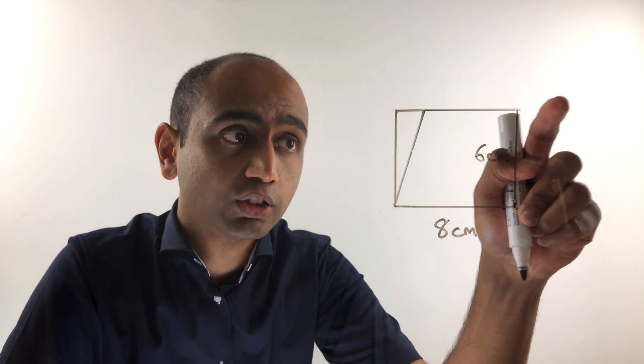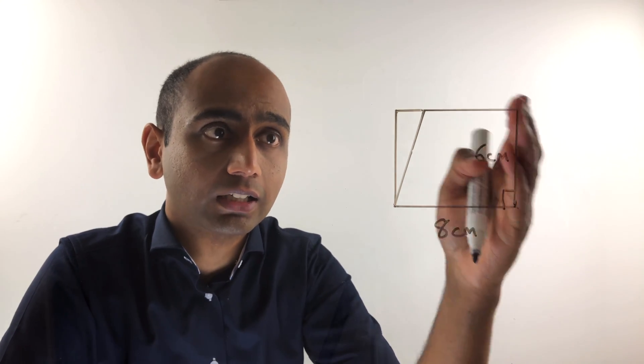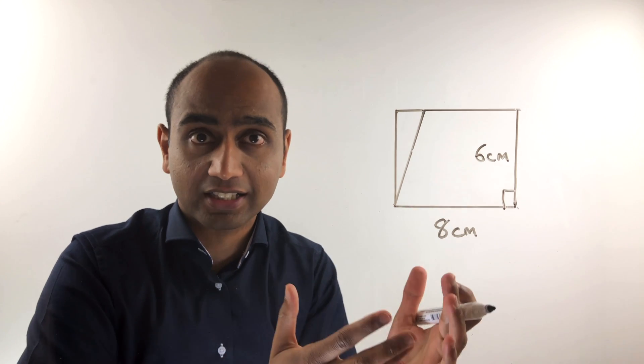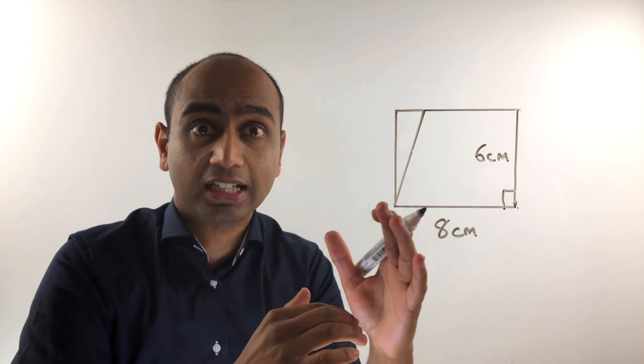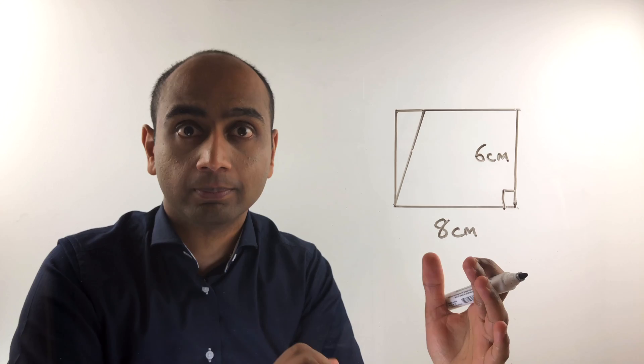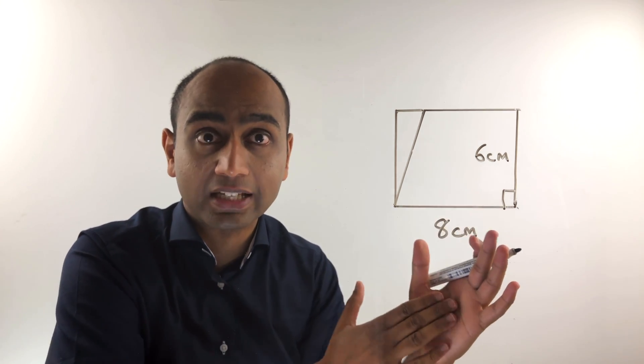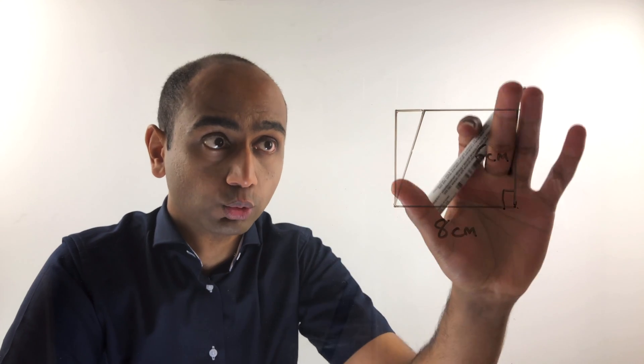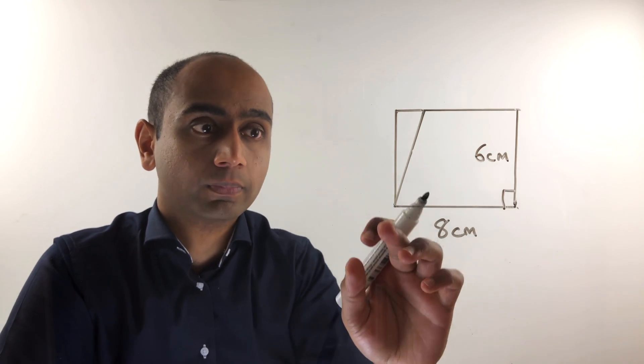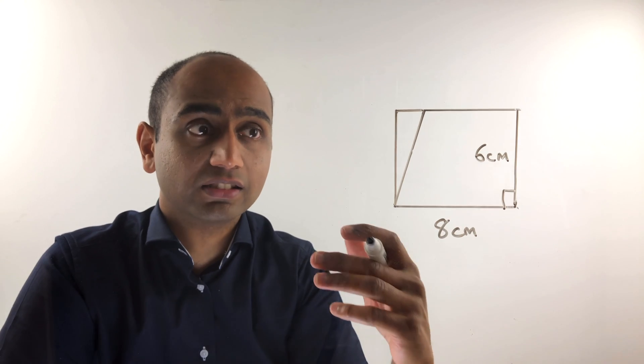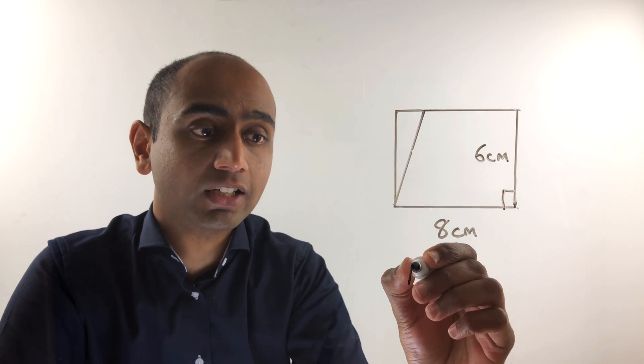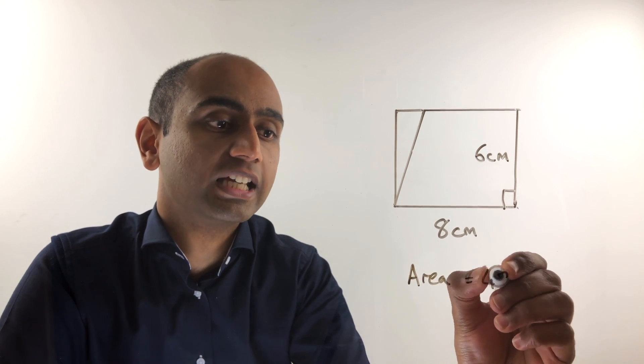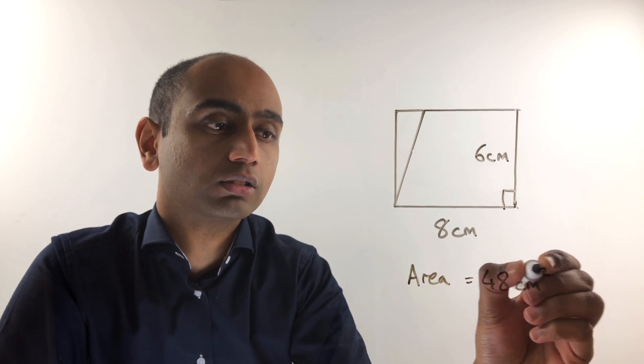So all we've done is cut off the triangle on the side here and move it over here. So what we have here is an 8 by 6 rectangle, and it has the exact same area as the original parallelogram. We didn't cut and throw away any bits of the parallelogram, we just rearranged it, so we've still got the full area of the original parallelogram. 8 times 6 is 48, so the area of this rectangle and therefore the original parallelogram was 48 centimetres squared.